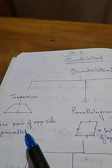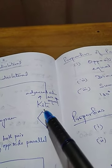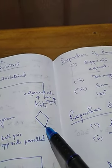Next comes to parallelogram. In a parallelogram, both pairs of opposite sides are parallel — that means both pairs. In a trapezium, only one pair is parallel; in a parallelogram, both pairs. Next comes to the kite. In a kite, no sides are parallel, but the adjacent sides are equal. That is called a kite.